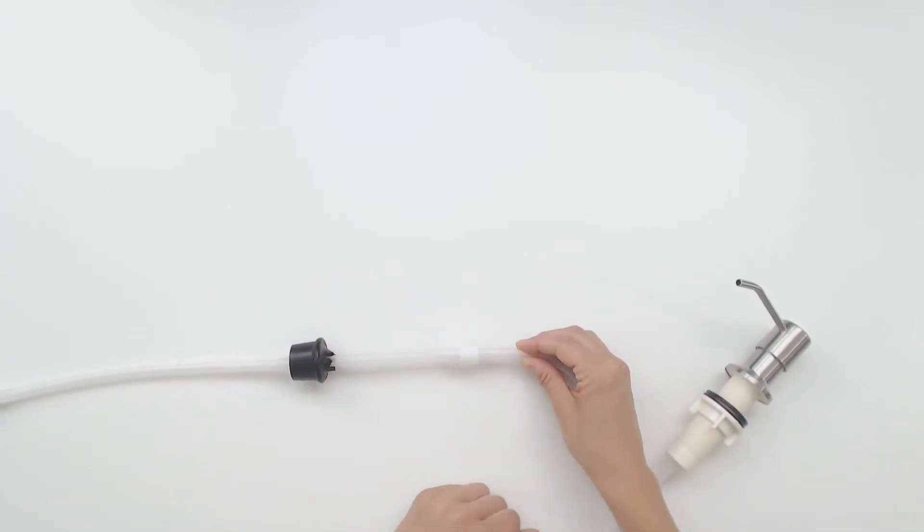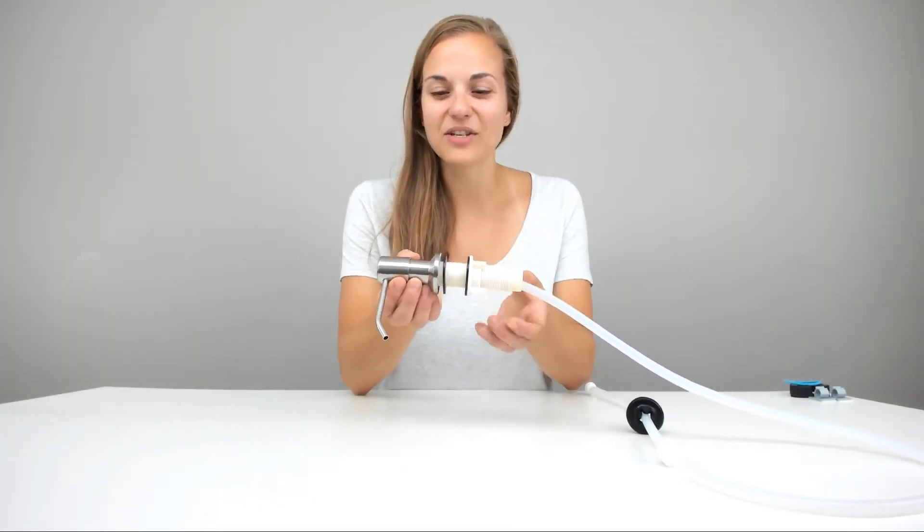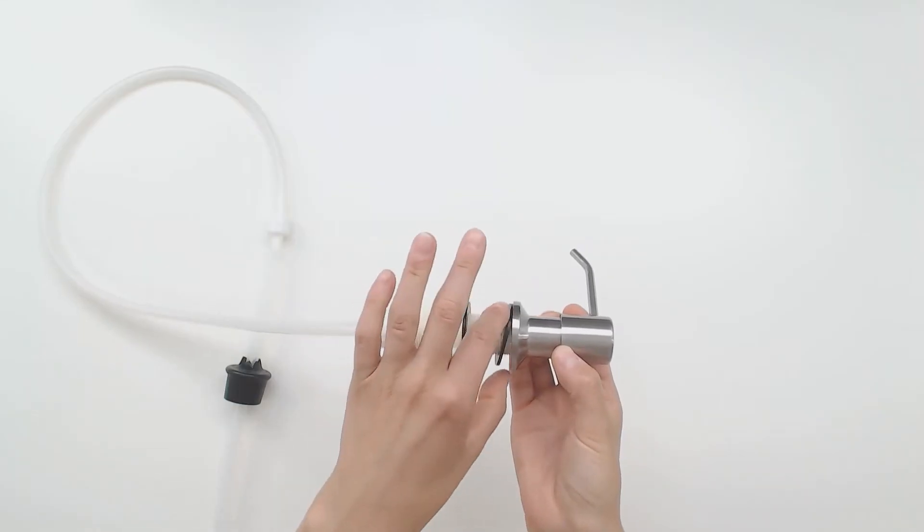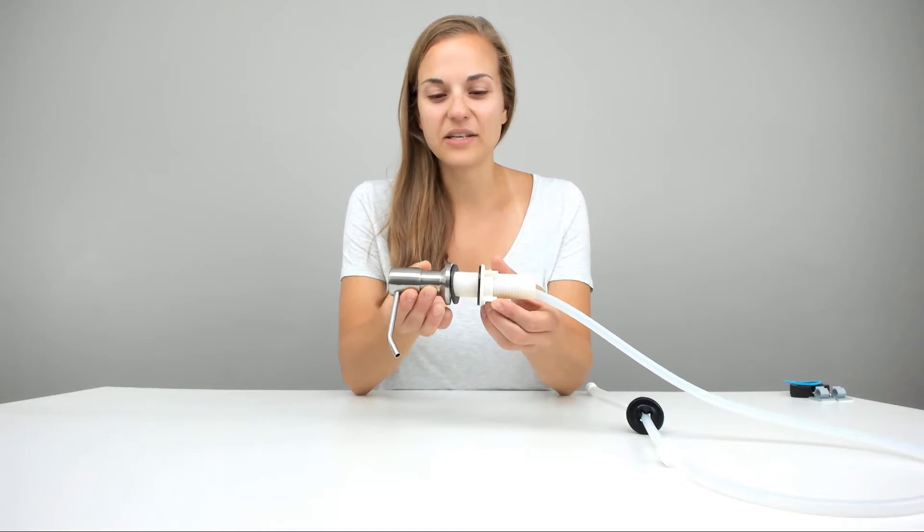Make sure that there is a seal on both the top and the bottom, and you can adjust it by screwing it in and making sure it is flush against your surface.